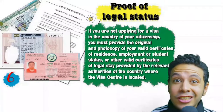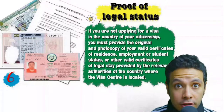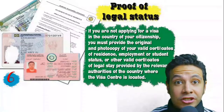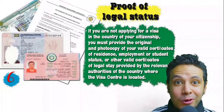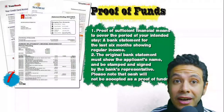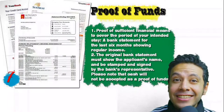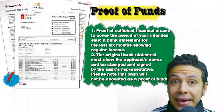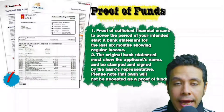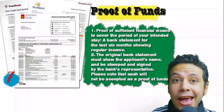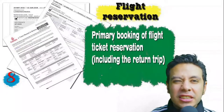In some cases you might be applying from a country different than your own. At that point you will need to provide proof of legal status — a certificate of legal residence in that country, or in some cases a valid residence visa can also be accepted. You will also need to provide proof of sufficient funds: a bank statement showing your balance for at least six months. The original bank statement must show your name and be signed and stamped by bank representatives. Cash will not be accepted as proof of funds.